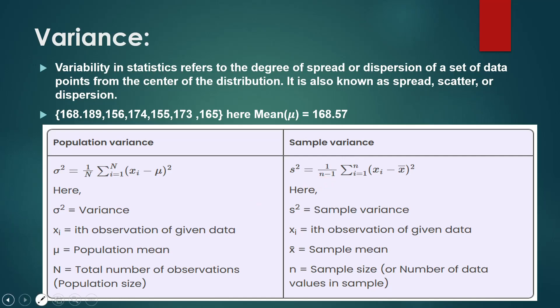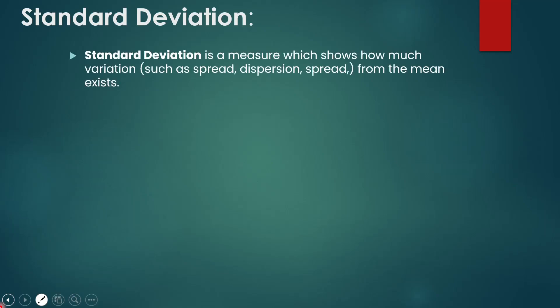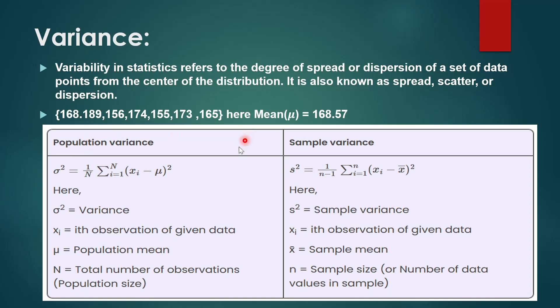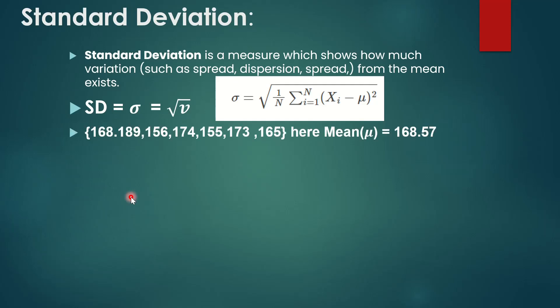Standard deviation is the square root of variance. The values represent data points, and the mean value is the measure of the spread. The standard deviation formula is the square root of the variance formula overall.